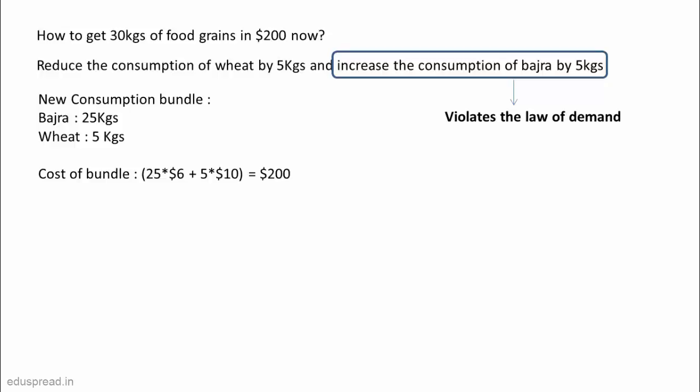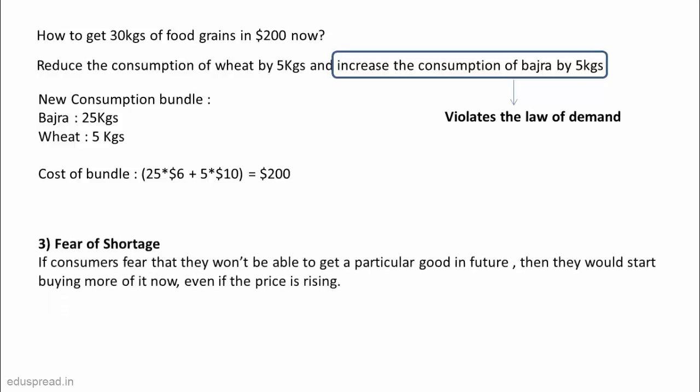There could be some other exceptions as well. For example, if consumers expect a shortage of a particular good in the near future, then they would start buying more of it in the current period even if the price of the good is rising. This is because they fear that they won't be able to get this good in future, and even if they are able to, they might have to pay even more in the future.